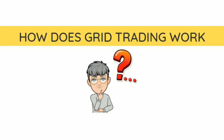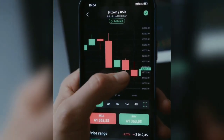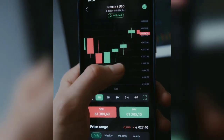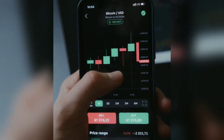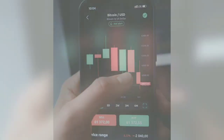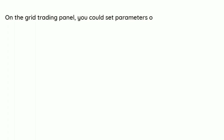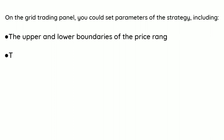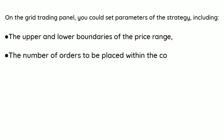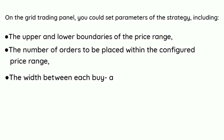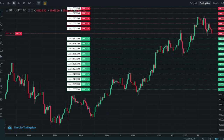How does grid trading work? Suppose you expect Bitcoin to hover in a price range between $50,000 and $60,000 in the next 24 hours. You could set up a grid trading system to trade within this predicted range. On the grid trading panel, you set parameters including the upper and lower boundaries of the price range, the number of orders to be placed within the configured price range, and the width between each buy and sell limit order.